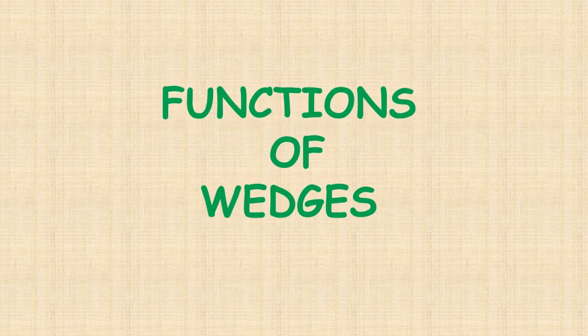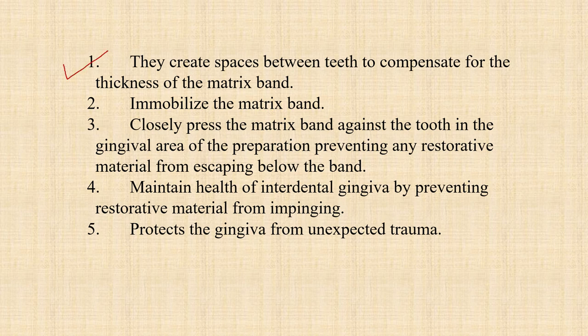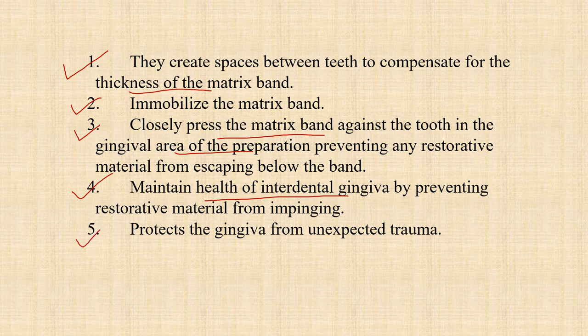Coming to functions of wedges — this is an important short note. Firstly, they create space between the teeth to compensate for the thickness of the matrix band, that means they separate the teeth slightly. Secondly, they immobilize the matrix band. Thirdly, they closely press the matrix band against the tooth in the gingival area of the preparation to prevent any restorative material from escaping below the band. Fourthly, they maintain the health of the interdental gingival by preventing the restorative material from impinging into it. Fifthly, they protect the gingival from unexpected trauma.